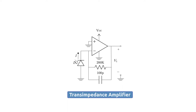Now let's look at individual stages. First, the Transimpedance Amplifier. The photodiode on the finger receives the LED light and converts the intensity to current. But we need a voltage so the microcontroller can read it. This is a simple op-amp transimpedance configuration. The op-amp's virtual ground property forces the current through the 200k resistor, so the output voltage is simply I × 200k. There is also a capacitor that acts as a low-pass filter.